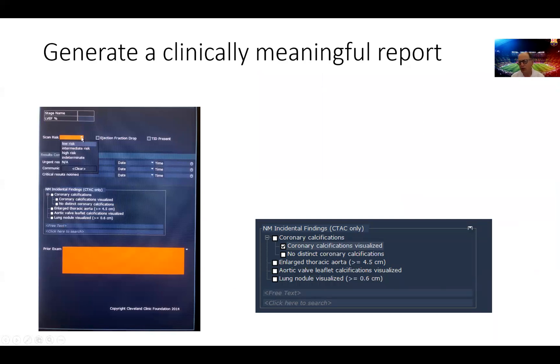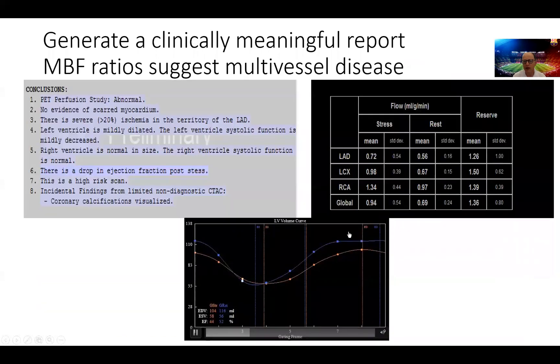And finally we get to the point where we have to report this test for risk. This is a patient with a lot of high risk markers. So this is a high risk study with a drop in ejection fraction and TID. The patient did not have a prior test to compare it to, but we comment about the coronary calcification in this patient.